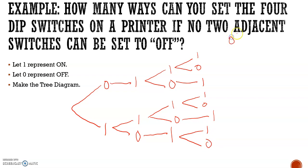We can write them out: 0111, 0110, 0101, 1111, 1110, 1101, 1011, 1010. Count them up: 1, 2, 3, 4, 5, 6, 7, 8. There are 8 options so no 2 switches are set to off.